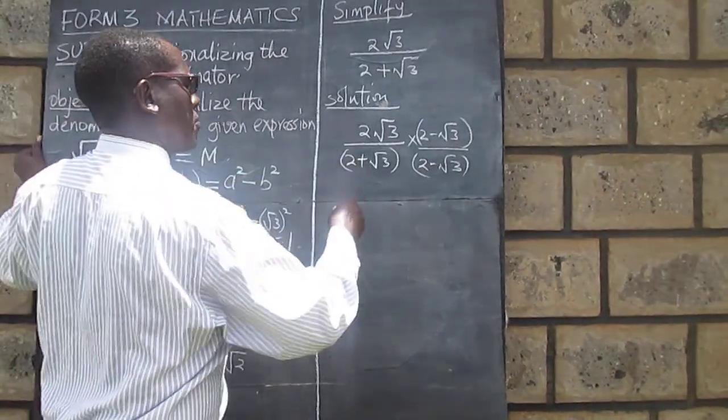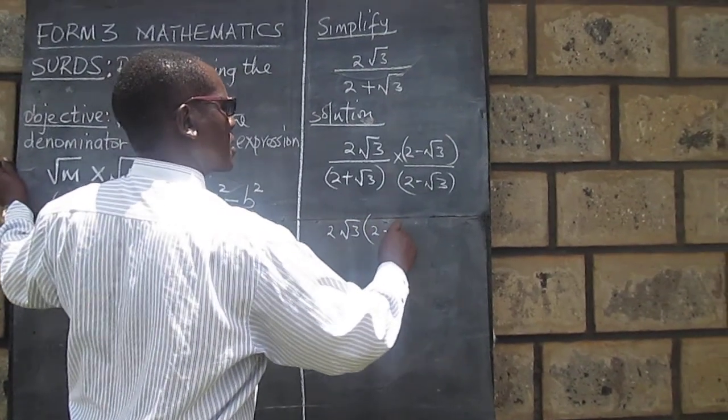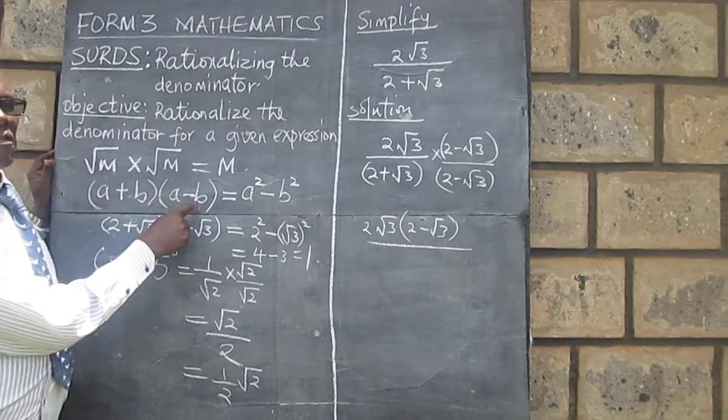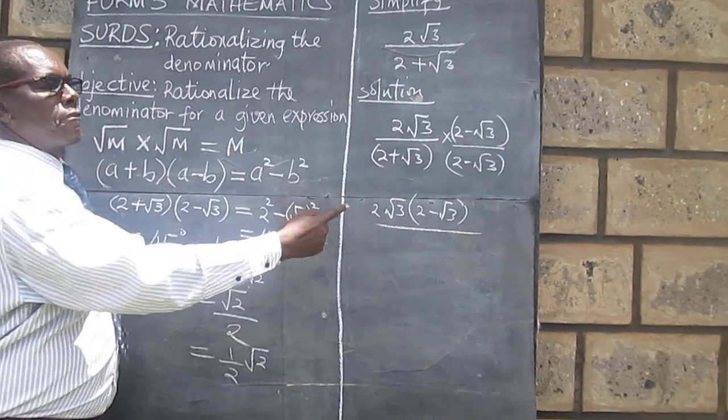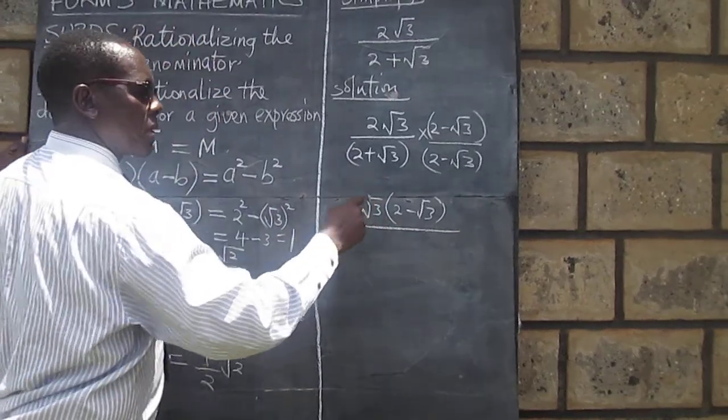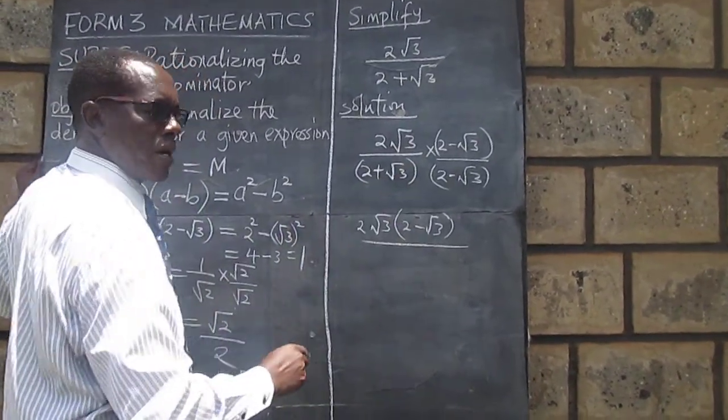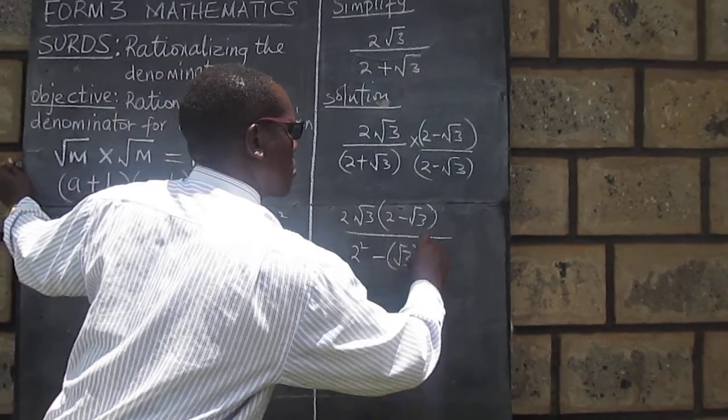Then we will have 2√3 into (2-√3) over, we come to the difference of two squares, the one we talked about. And therefore this simply becomes 2² subtract (√3)², and that's 2² minus (√3)².